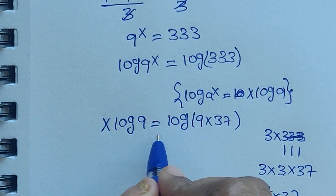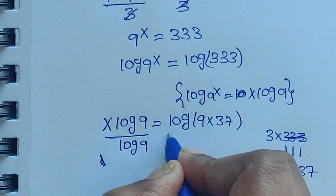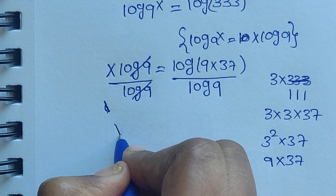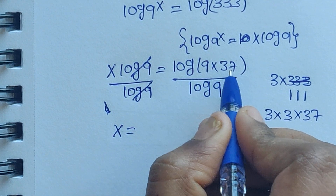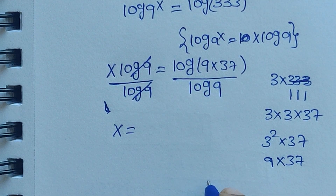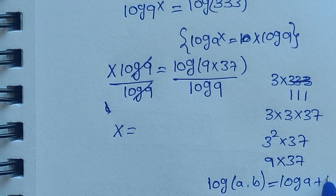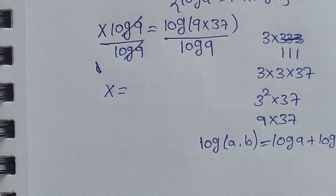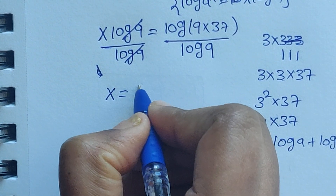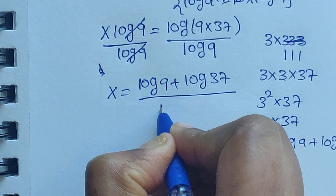Now divide by log 9 on both sides. Log 9 and log 9 get cancelled, so x equals log of 9 times 37. This is in the form of log(a times b), and using the product rule — log(a times b) equals log a plus log b — we apply this formula to get: x equals log 9 plus log 37, divided by log 9.